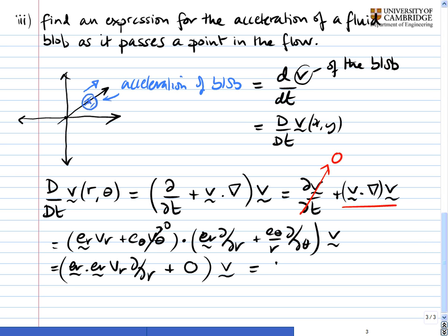And let's put in our expression for v in a moment. e_r dotted with e_r gives you 1, so all we have is v_r d by dr of v, and v is just equal to e_r v_r. Now, we know that there's no variation in the r direction of the unit vector,